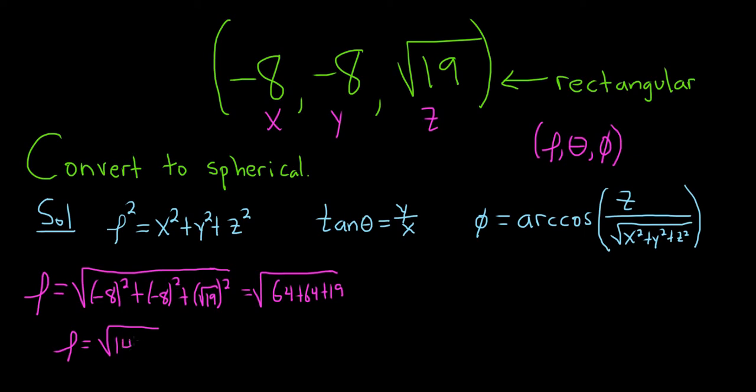So oftentimes when you get this, you try to simplify it. If you can't do it, it's no big deal. I believe this is 49 times 3, and so the square root of 49 is 7, so this is 7 square root of 3. So we have rho.